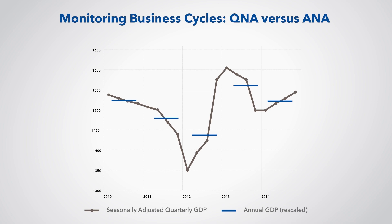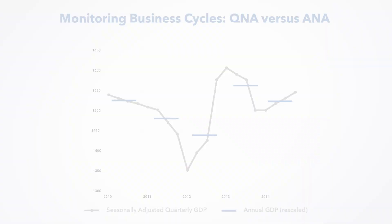The first indication of that upturn doesn't appear in the annual data until the data for 2013 are published, by which time the QNA data show the economy has already gone through a second downturn. Clearly, the ANA data are not frequent or timely enough to provide practical guidance about business cycles to economic policymakers.